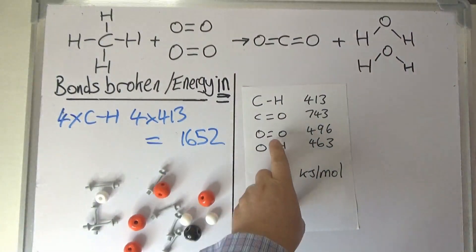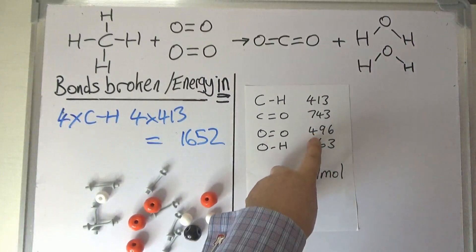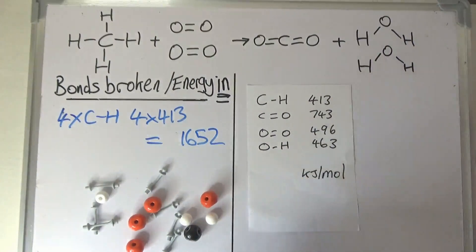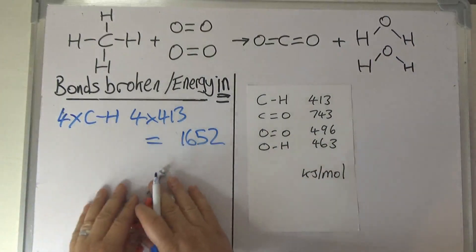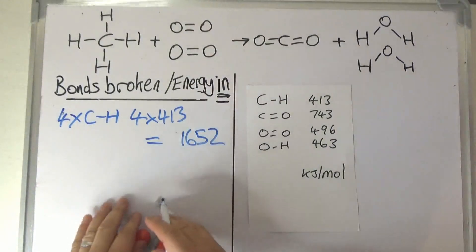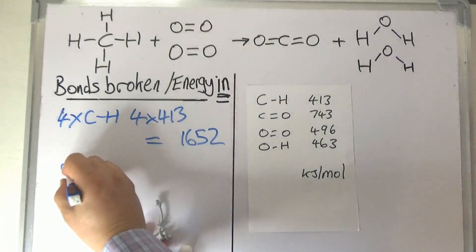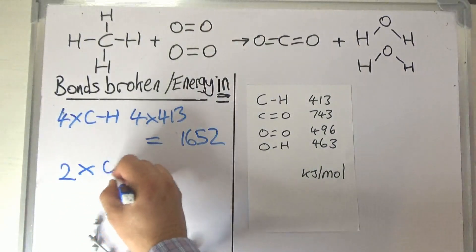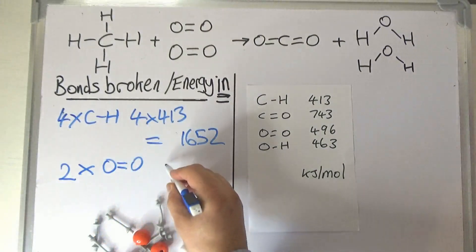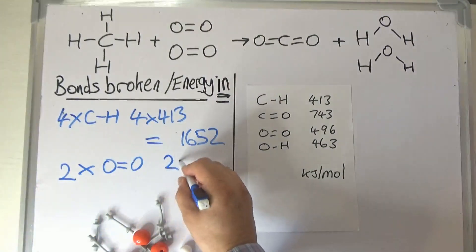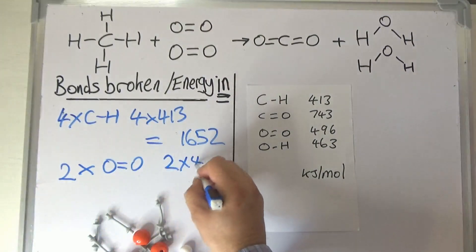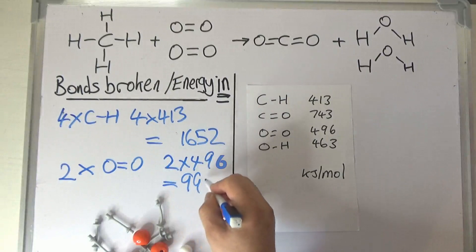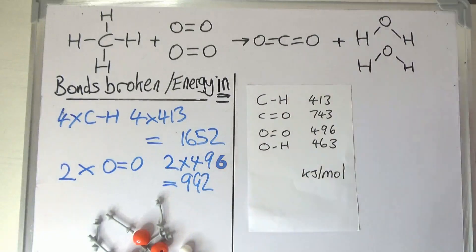From the table we can see each double bond takes 496 kilojoules per mole of energy, and we've just broken two of them. So that's two times O=O, which is two times 496, which is 992 kilojoules per mole.